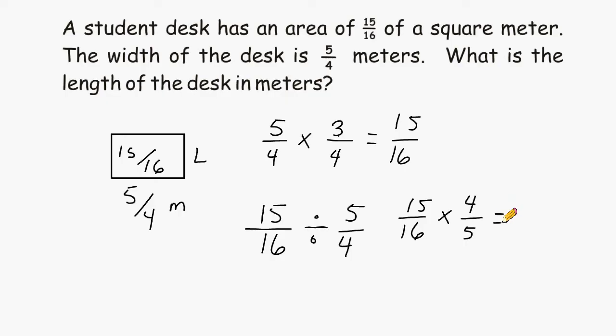The next thing that we can do is look for opportunities to use cancellation. And we can see that 15 and 5 can be cancelled because they share a common factor of 5. 5 goes into 15 three times, and 5 can fit into 5 exactly once. And we can also cancel out the 4 and the 16 by a factor of 4. 4 can go into 4 once, and 4 can go into 16 four times.